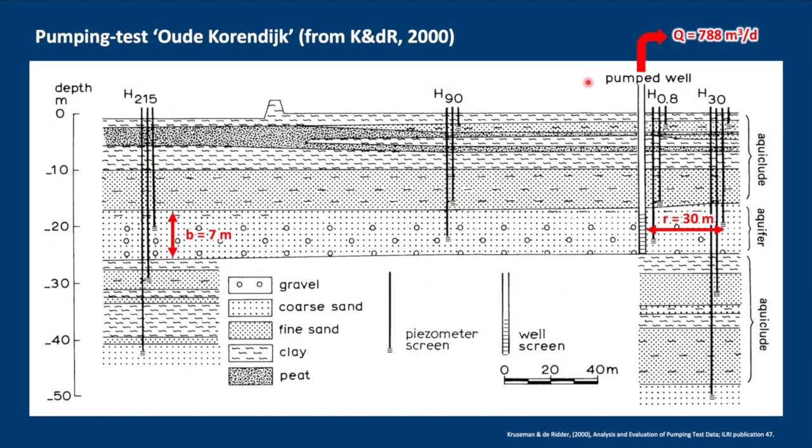Let's illustrate it with an example from Kruseman and de Ridder, the Oude Korendijk pumping test. We had a pumping well here which was pumping at about 800 cubic meters per day and there are three observation wells at 30 meters, at 90 meters, and at 215 meters.